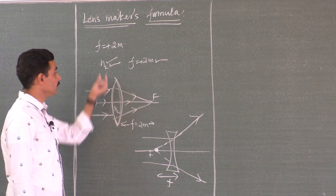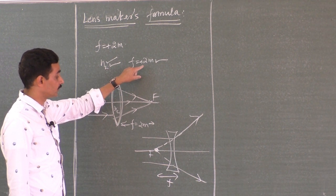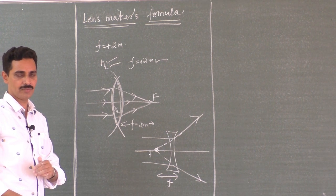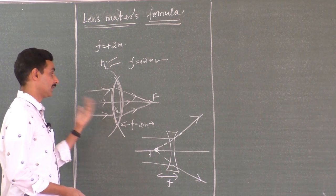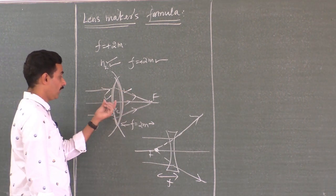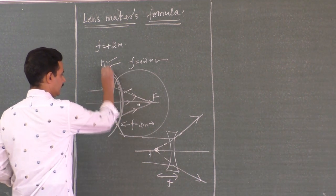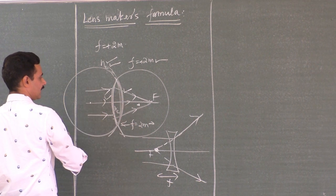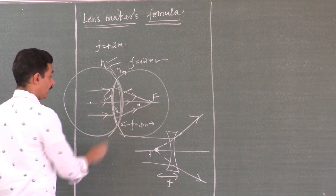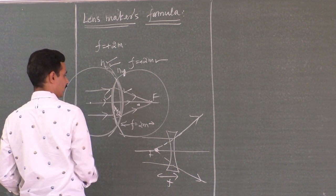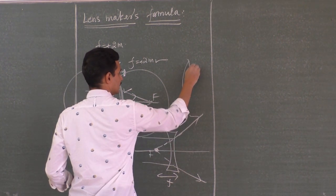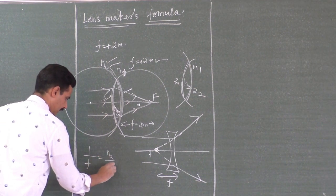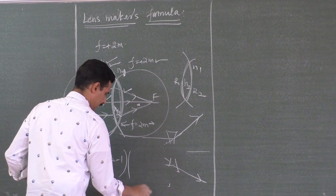If the lens maker, using the material you suggested, has to produce a focal length of 2 meters according to the doctor, how much radius should be given to the two surfaces? That is what he has to select — R1 and R2. The center for the first surface will be here, and the center for the second surface will be here. To connect focal length and the radii, we also need the refractive index of the lens N2 and the surrounding medium N1. Then 1/f = (N2/N1 − 1) × (1/R1 − 1/R2). This is called lens maker's formula.